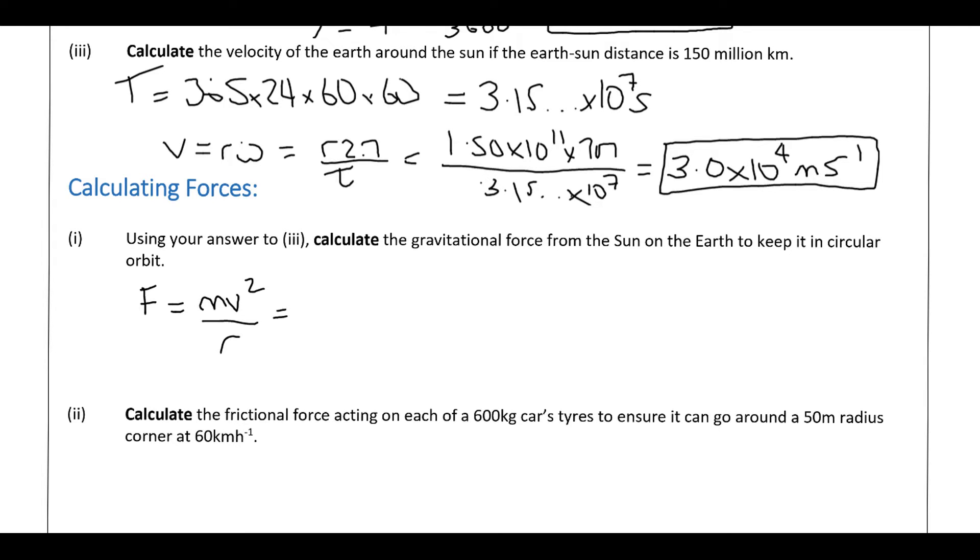So the mass of the earth, 10 to the 24, you might see it in your formula sheet is 5.99, it doesn't make any real difference, times by 3 times 10 to the 4 squared, all divided by 1.5 times 10 to the 11, which is the radius of the orbit. And if we put that all in, we end up with a number that is 3.6 times 10 to the 22 newtons. So a massive force. Again, both of the bodies involved are incredibly massive, so you'd expect a rather large force.